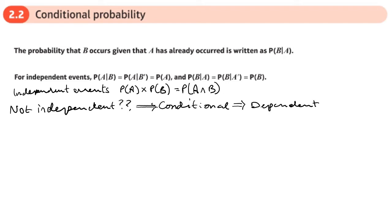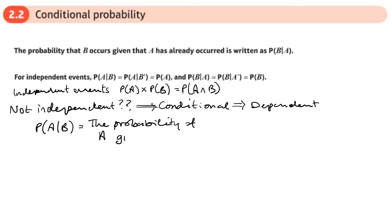We have notation for that, written like this. We read it as: the probability of A given B — in other words, what's the probability of A given that B has just taken place? That's conditional probability.